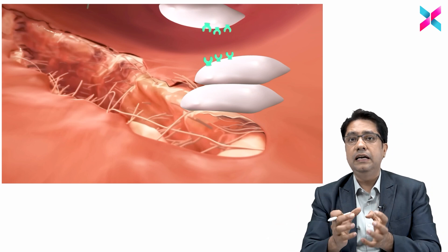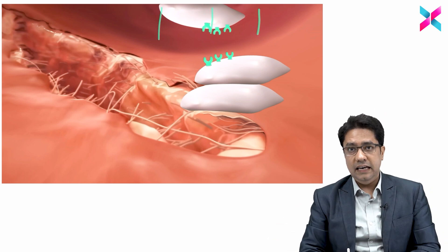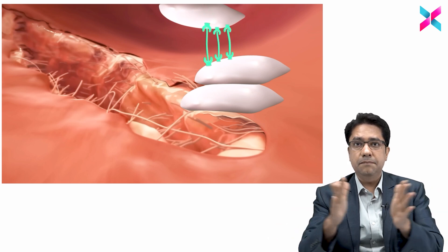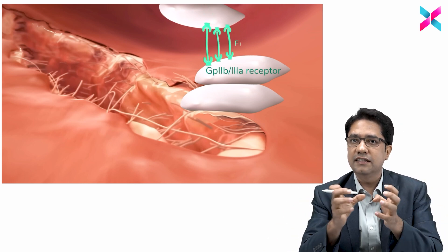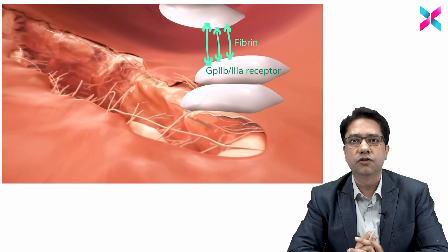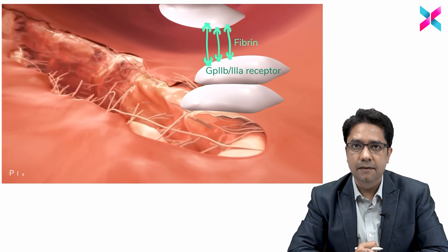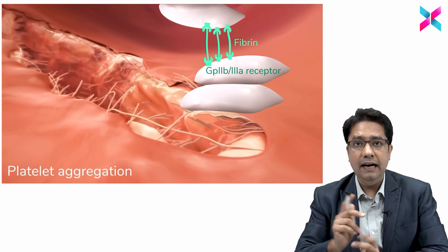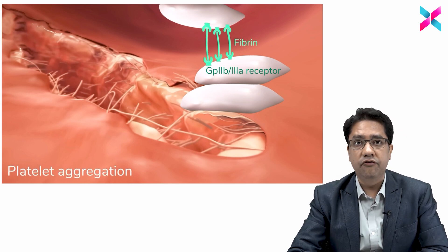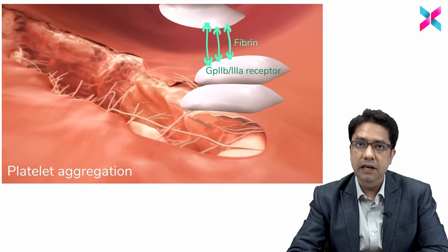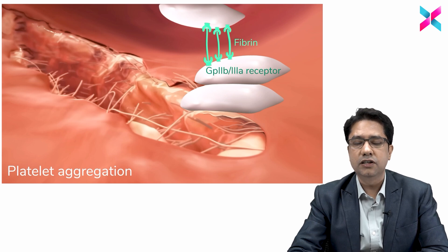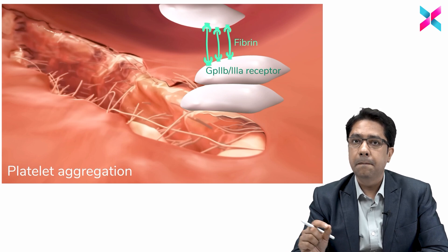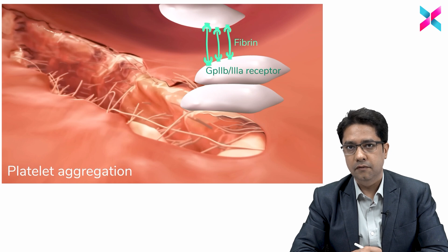After platelets are attached, they are cross-linked — a cement-like substance called fibrin is added. The receptor for fibrin on the platelet is the GP2B3A receptor. This third step is known as platelet aggregation.